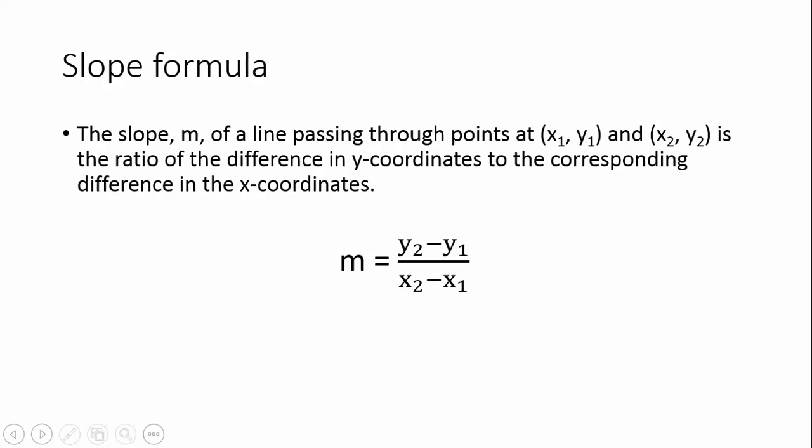Now let's talk about the slope formula. We just figured out how to find the slope given the graph. But what if we don't have the graph and only have two ordered pairs? The slope m of a line passing through points (x₁, y₁) and (x₂, y₂) is the ratio of the difference in y-coordinates to the corresponding difference in x-coordinates. Slope equals y₂ minus y₁ over x₂ minus x₁.